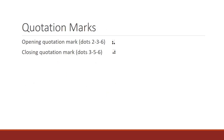The next set of punctuation marks to be learned are quotation marks. Again, these operate just like print quotation marks. The opening quote is dots two, three, six, and the closing quote is dots three, five, six.